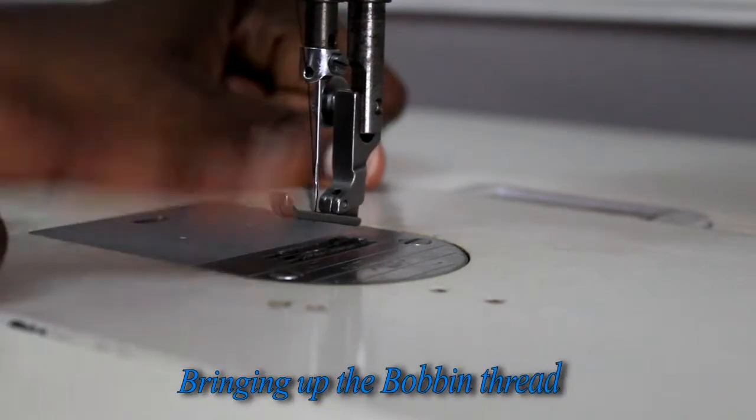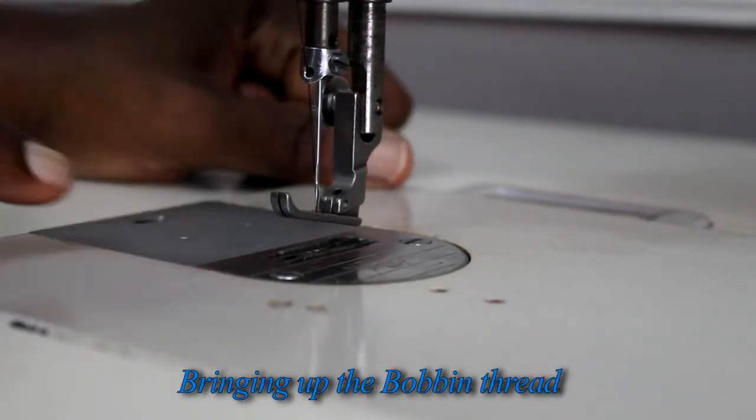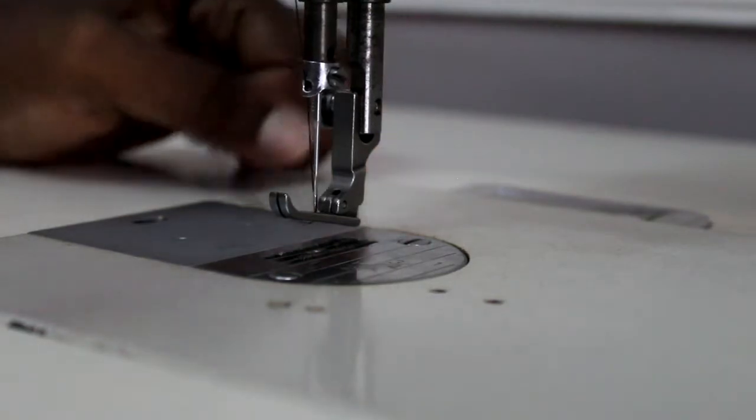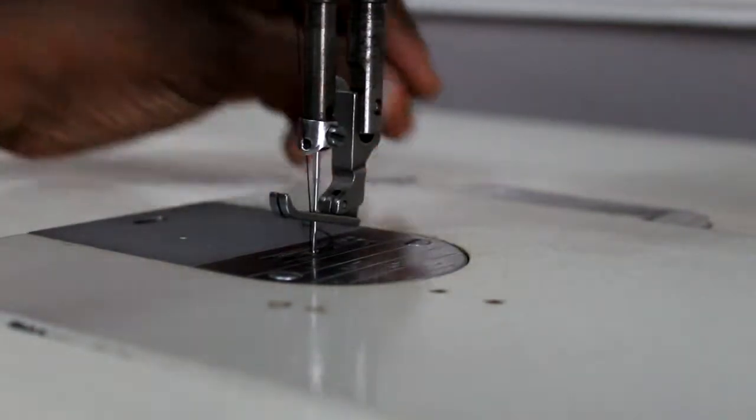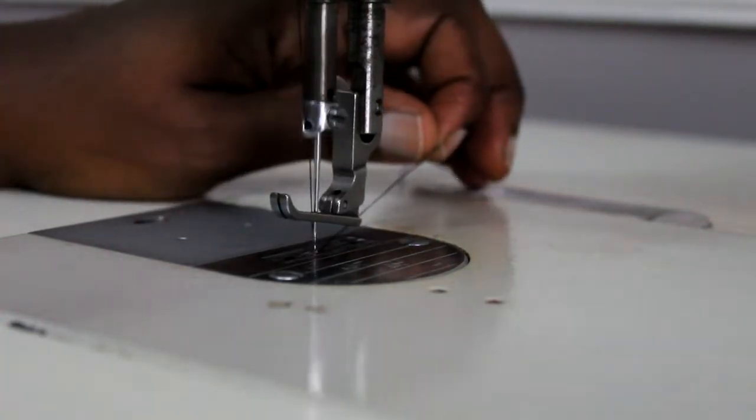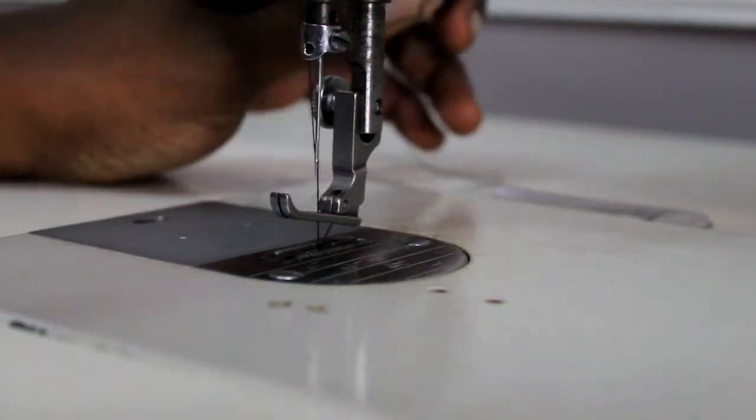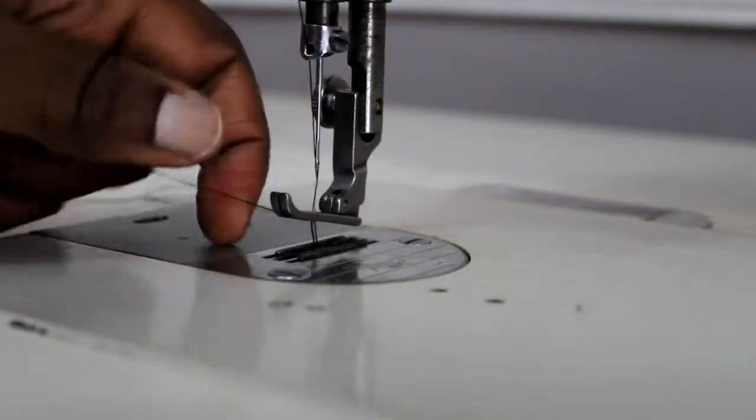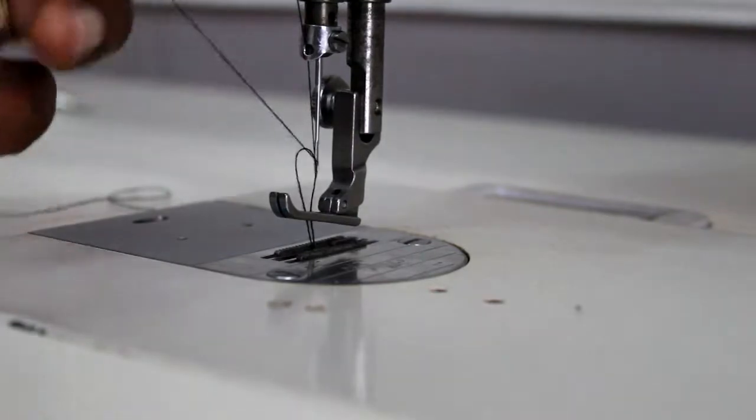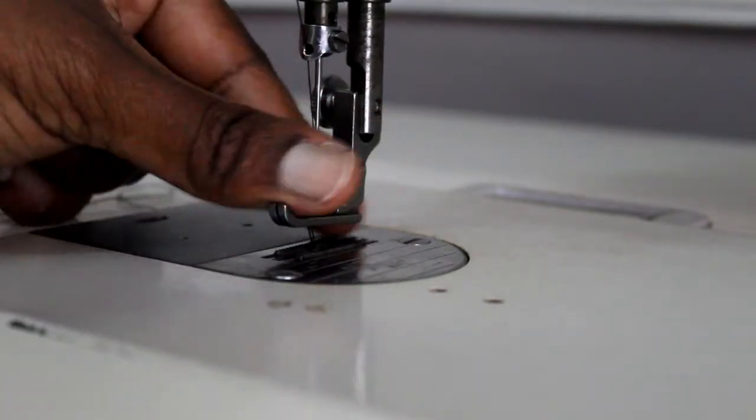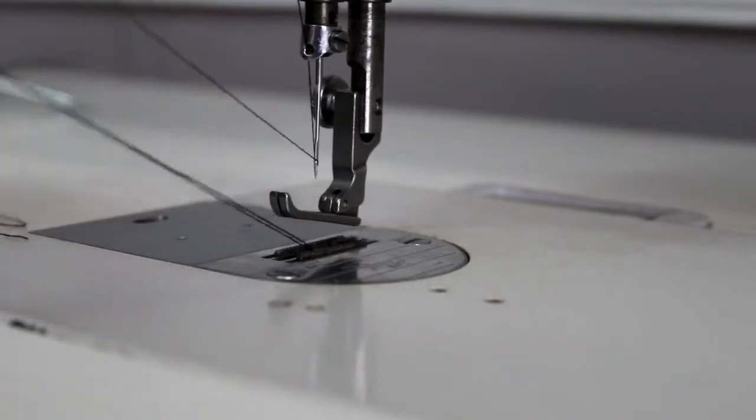Now we're going to bring up the bobbin thread. Turn your hand wheel towards yourself so the needle goes down and comes back up. It should come up with the bobbin thread. You might have to do this twice. Here we go, that's the bobbin thread. Pull that out and put both threads under the presser foot to the back of the machine and you're ready to sew.